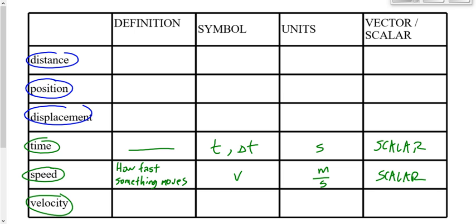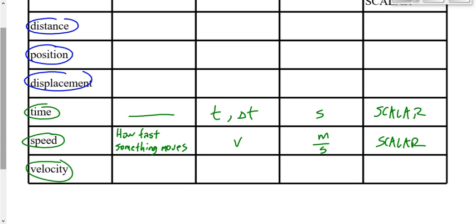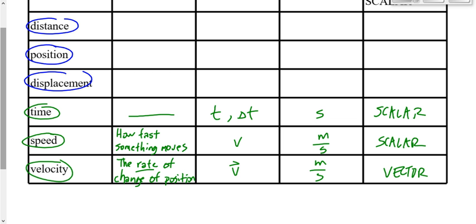Finally, velocity. Velocity is how fast something moves as well, but there's a direction associated with it. More specifically, we define it as the rate of change of position. Its symbol is v with an arrow over it, meaning it's a vector quantity. The units we use for velocity are, just like for speed, meters per second.